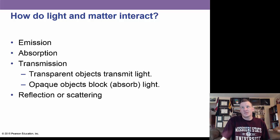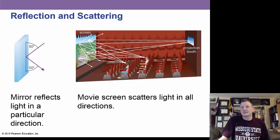Light and matter can interact either by emission, by absorption, transmission, or reflecting or scattering. In reflecting and scattering, we have like a mirror that reflects light in a particular direction, or like a movie screen that scatters the light in many directions.